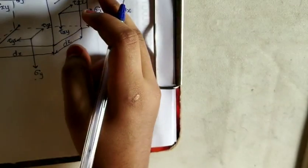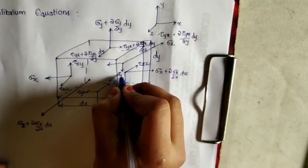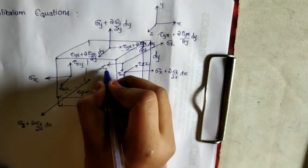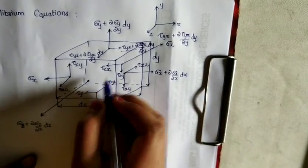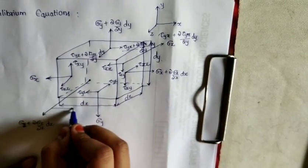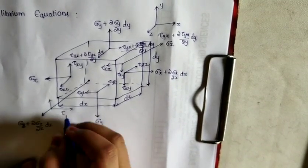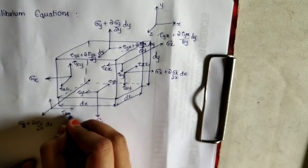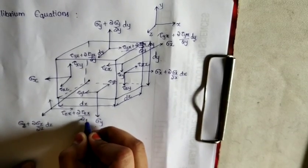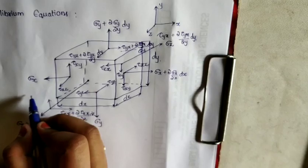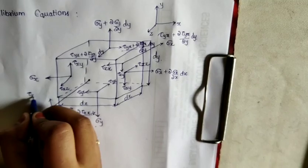In the z-direction, shear stresses are tau_zy and tau_zx. On the opposite z-face: tau_zy plus (∂tau_yz/∂z)dz, and tau_zx plus (∂tau_zx/∂z)dz.